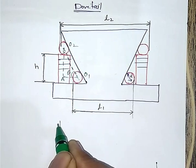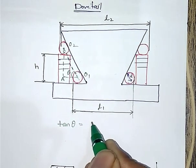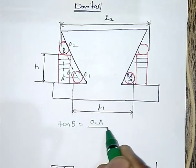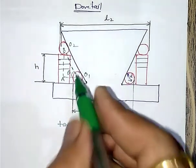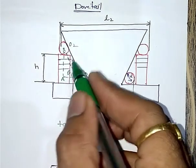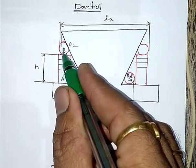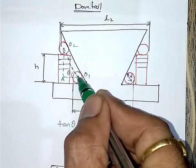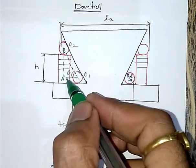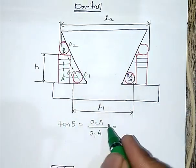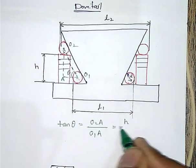tan theta is equal to O2A divided by O1A. We know O2A is equal to height of slip gauge plus radius of the roller minus radius of this roller. But since the roller radii are same, so I can write this as O2A is equal to nothing but slip gauge height, H.